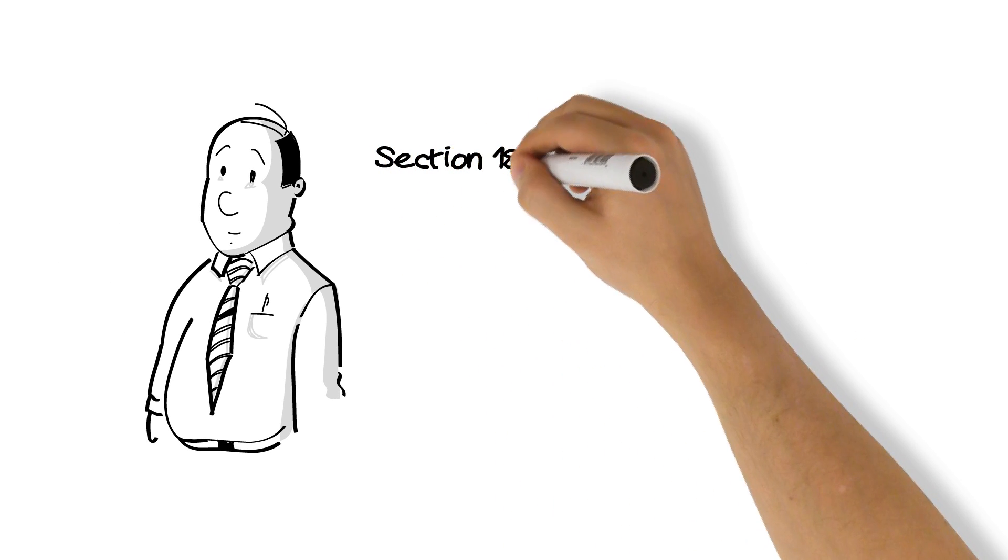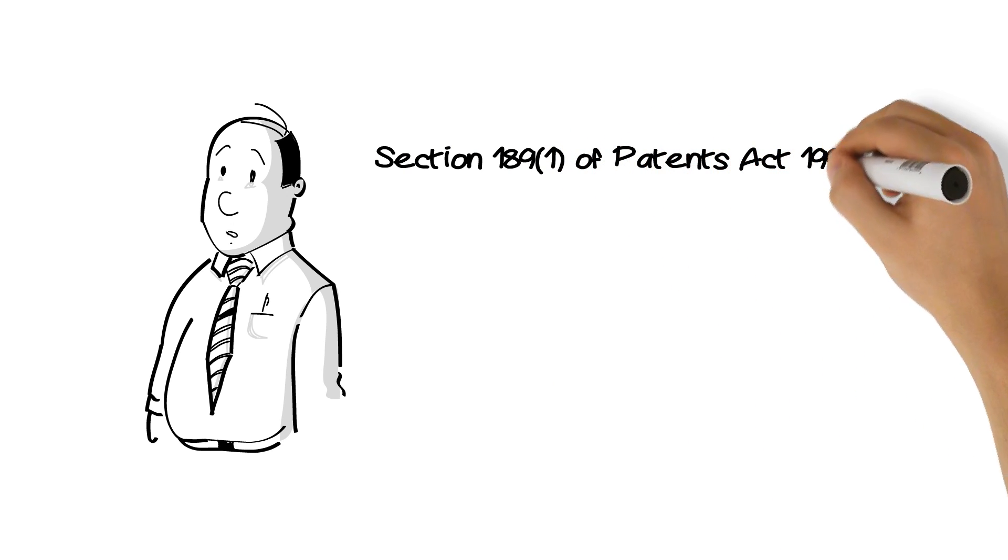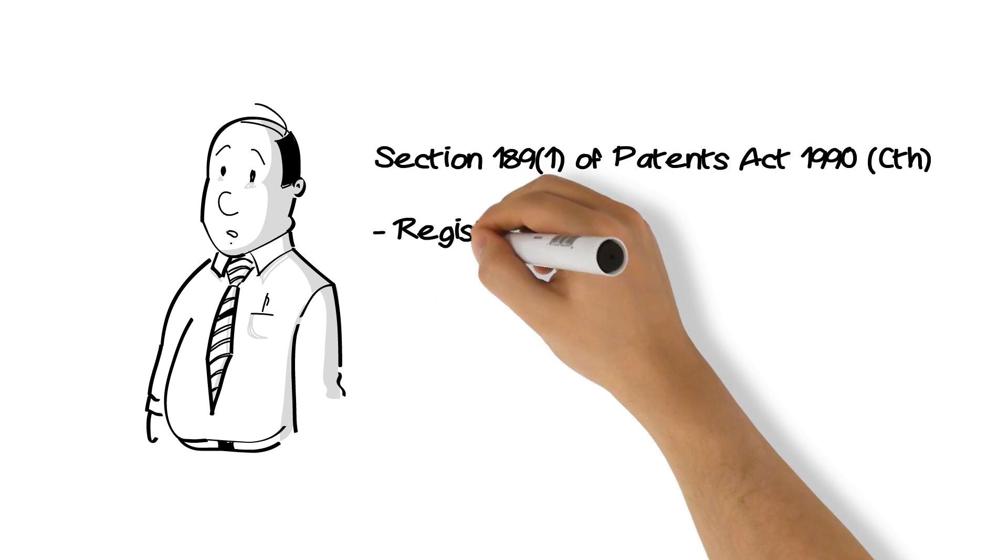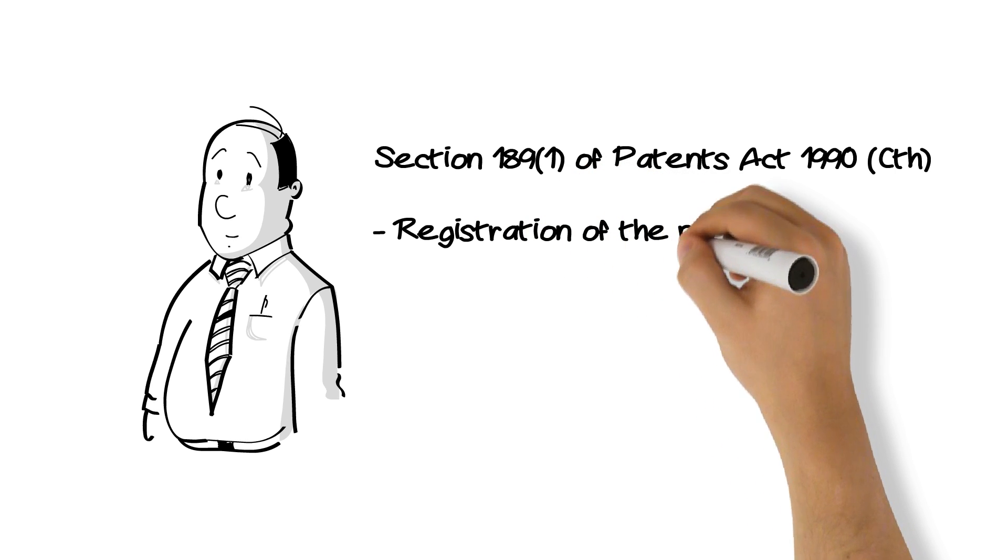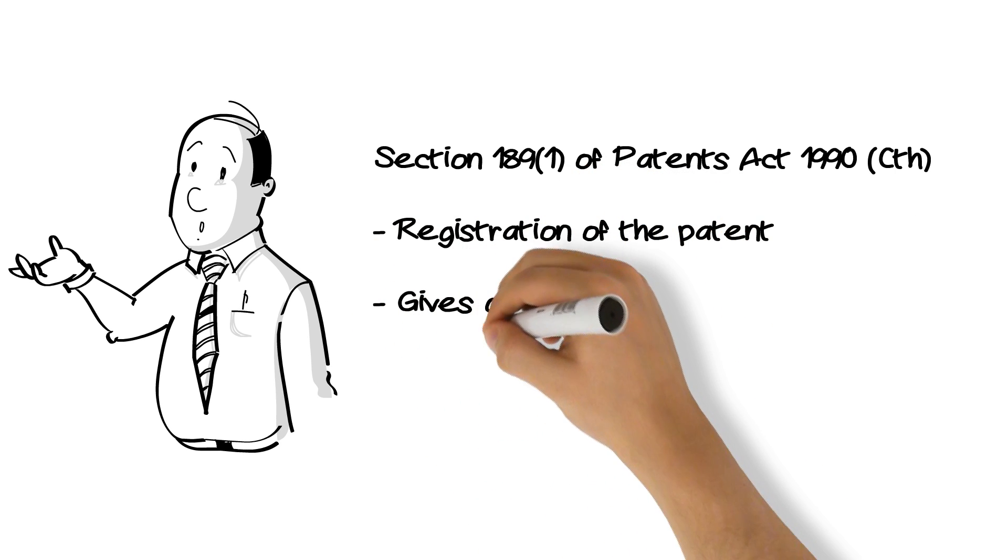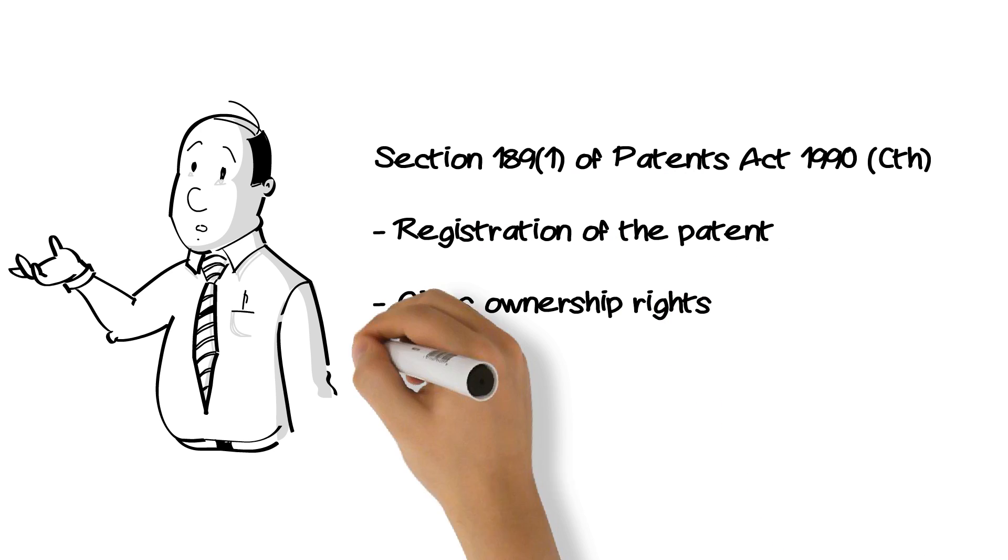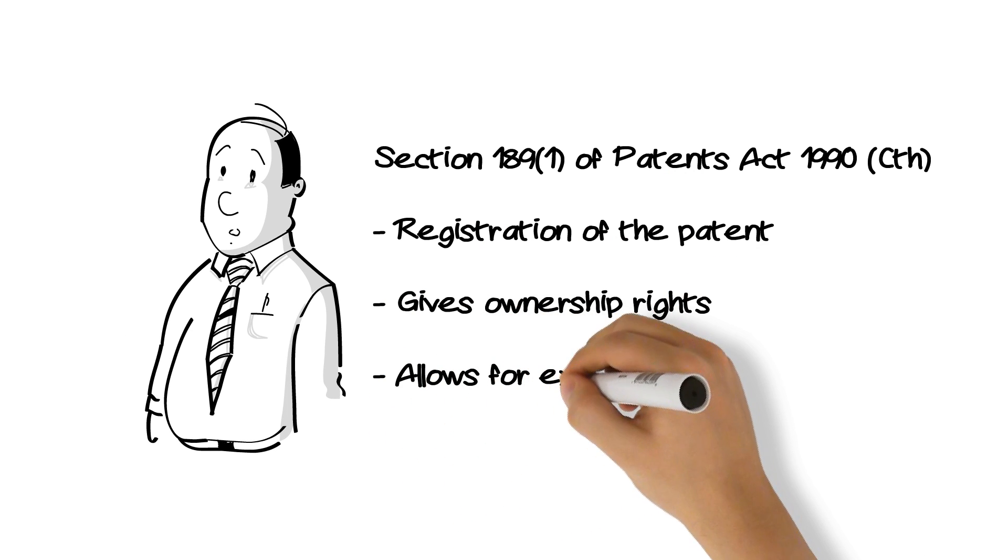Section 189, subsection 1 of the Patents Act 1990, allows a patentee, subject to any rights appearing on the register, to deal with a patent as the absolute owner of it, and give good discharges for any consideration for such dealing.